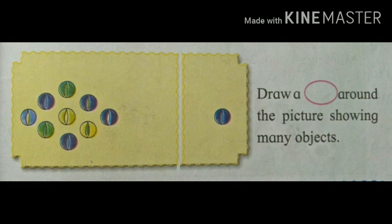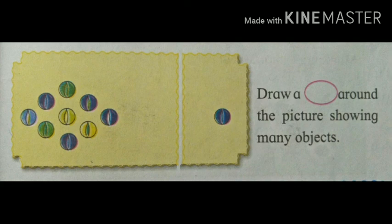The question is: draw a circle around the picture showing many objects. So students, we have to circle the many objects. Take a pencil and circle the many object. Have you done? Very good.